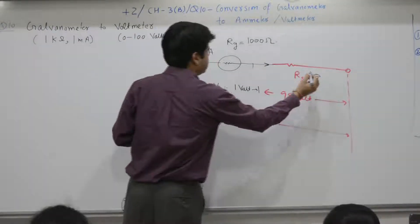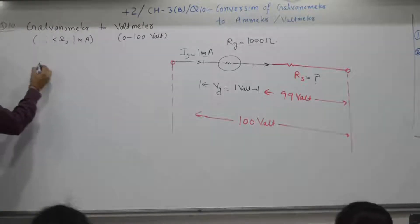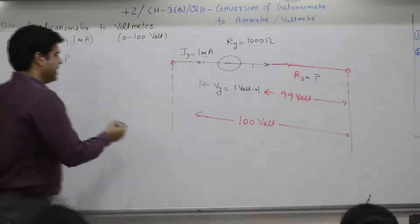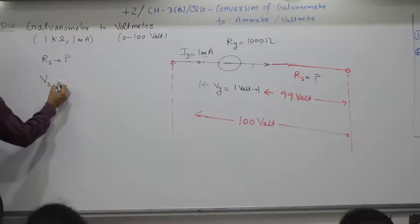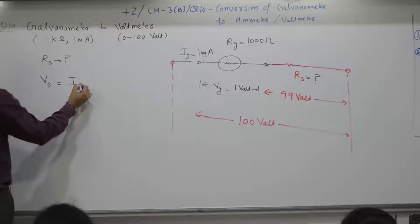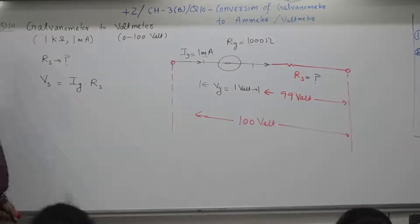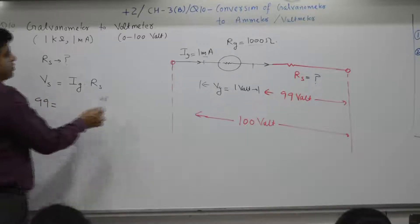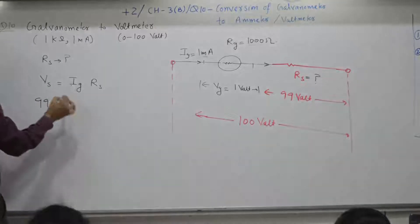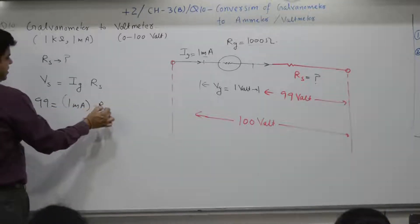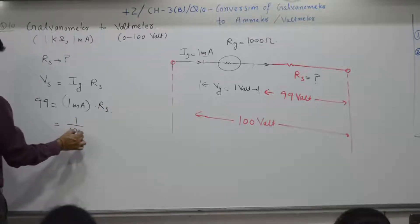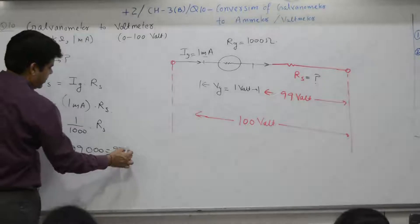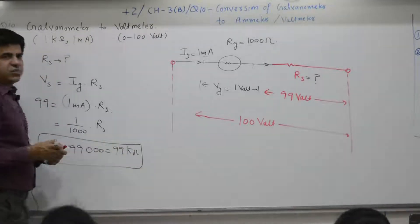Voltage across R_s: since the two are in series, the current is the same. V_s equals I_g into R_s, where V_s is 99 volt. Using 1 milliampere equals 1 by 1000, R_s equals 99,000 ohm or 99 kilo ohm. Conceptually for competition purposes this is very simple.